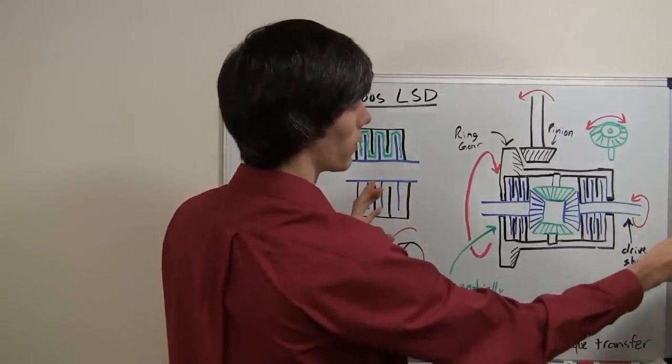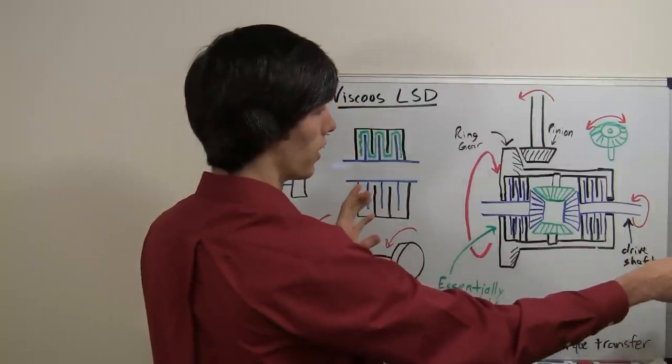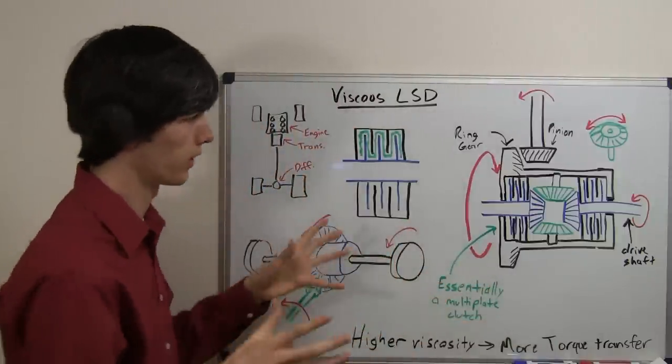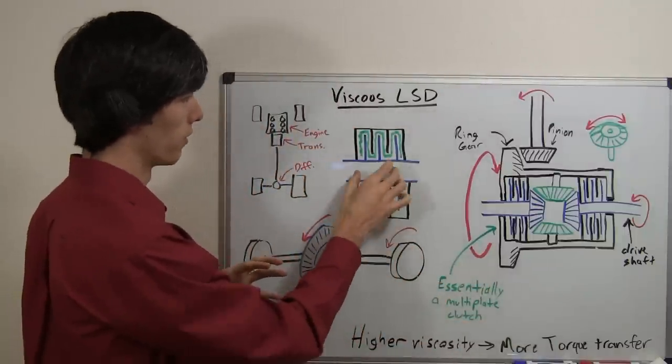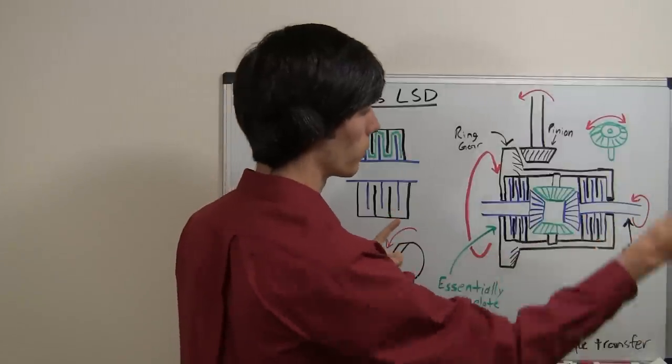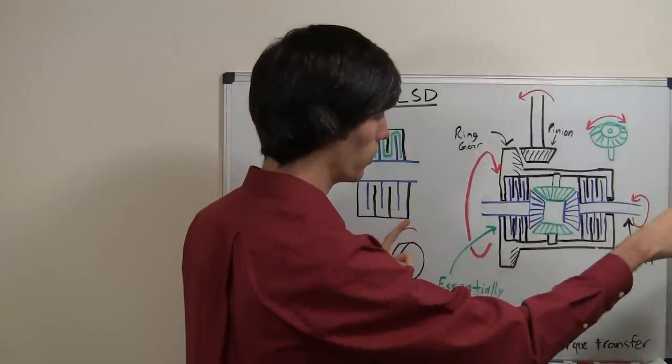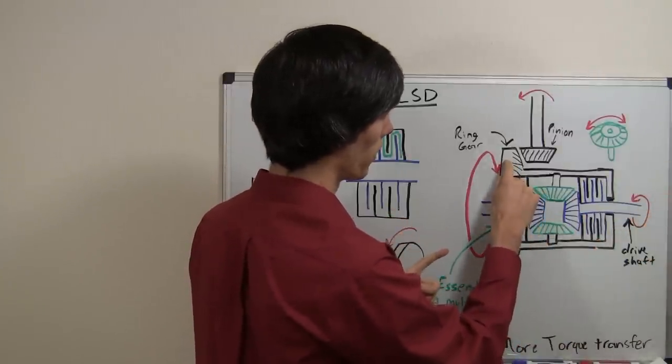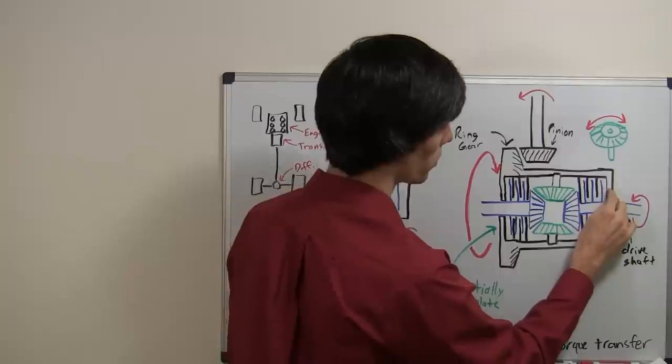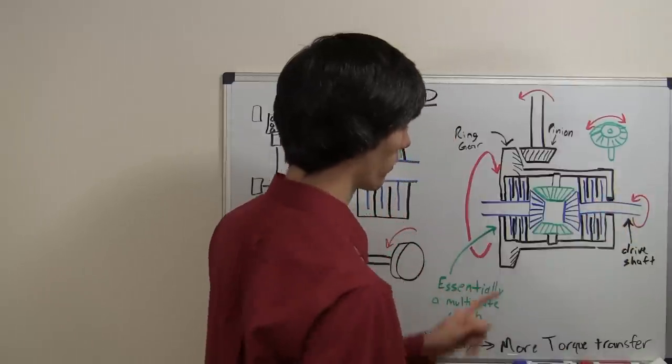So what happens is the right tire on the ice, because it has less resistance, it wants to spin. Because this is basically an open differential until this liquid creates friction. So the outside tire is going to start to rotate on its own quickly with this differential housing. So there won't be a difference in speed between the differential housing and this right drive shaft.